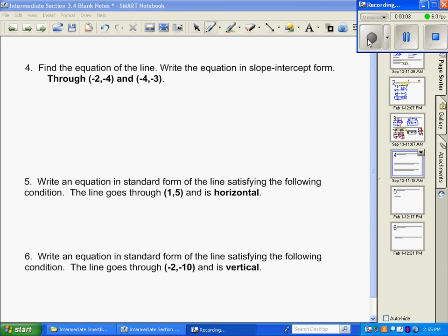Alright, problem number four. We're going to find the equation of a line. Once again, we're going to use slope-intercept form, and we are starting with two points. We said we always need a point and a slope to start.